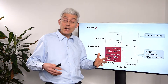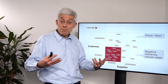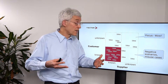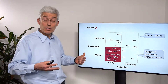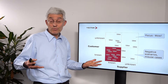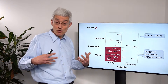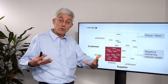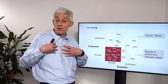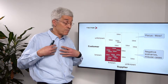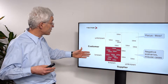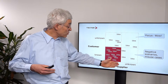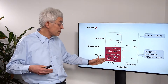Let me show you in a brief grid what it really means. For that, let us take two perspectives: the perspective of our customer — the person or group of stakeholders which really matters. Value exists only in the eye of the beholder; value is never something we define as a supplier. So we have to look into what is known to the customer, what is unknown to the customer, and what is known or unknown to us.